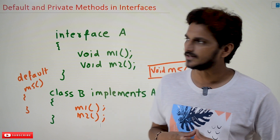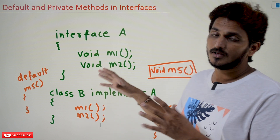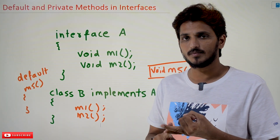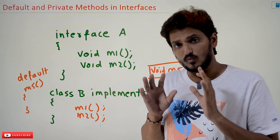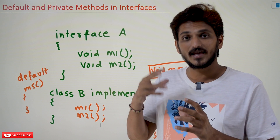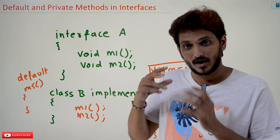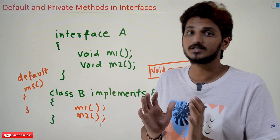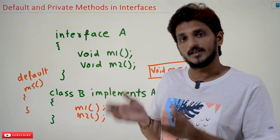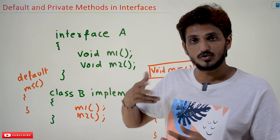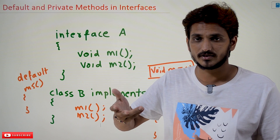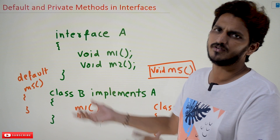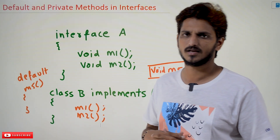Coming to today's class, in interfaces we can use private methods and default methods. So what is a default method, why they implemented, why they are allowed to use default methods in interfaces? First, understand the concept — why they are allowed to use default methods in interfaces. Then we will take an example and see how we define the default methods.